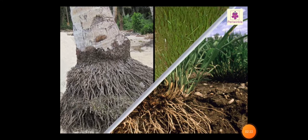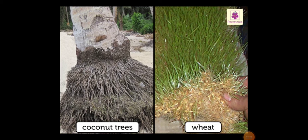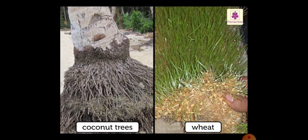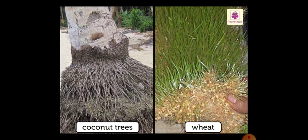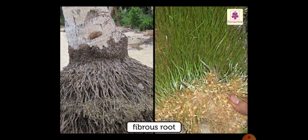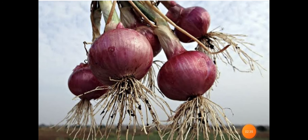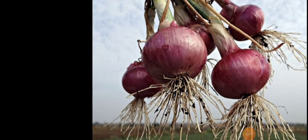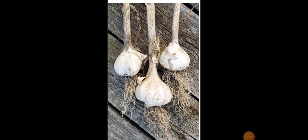Some plants like grass, wheat, and coconut trees don't have a main root. They have a bunch of small roots. These are called fibrous roots. Onion and garlic also have a fibrous type of root system.